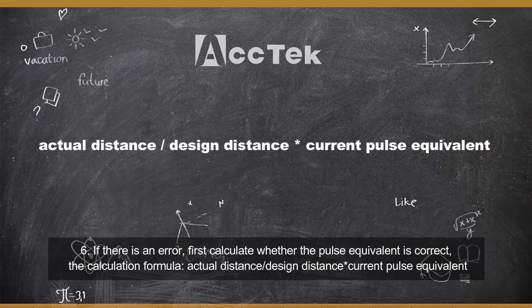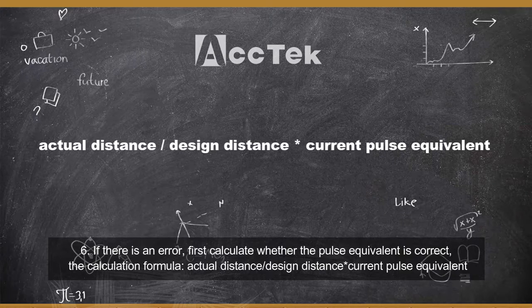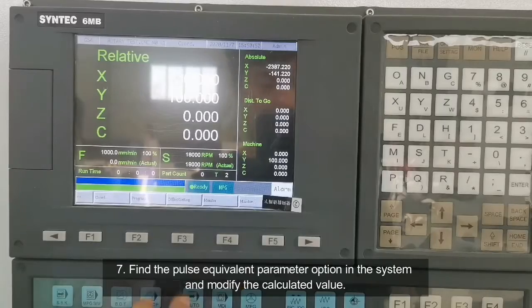The calculation formula is: actual distance divided by design distance, multiplied by the current pause equivalent. Then find the pause equivalent parameter option in the system and modify it to the calculated value.